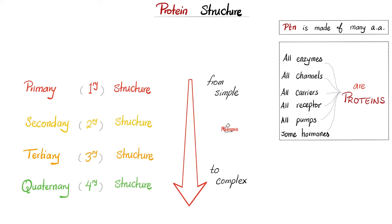Now you're ready to understand the protein structure. Proteins are made of many amino acids, as you know. All enzymes of your body are proteins, all channels, proteins, all carriers are proteins, all receptors are proteins, all pumps are proteins, some hormones are proteins, the others are fat.